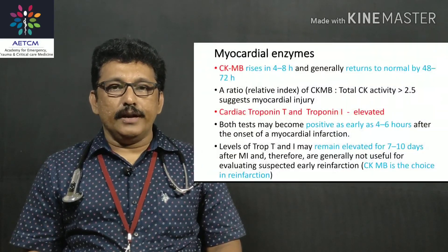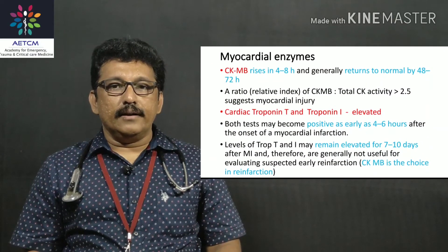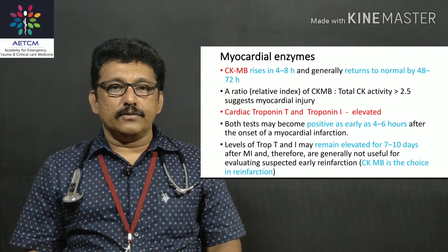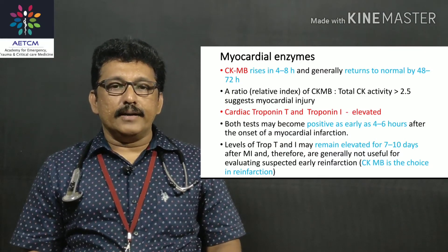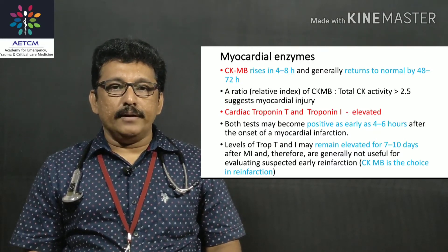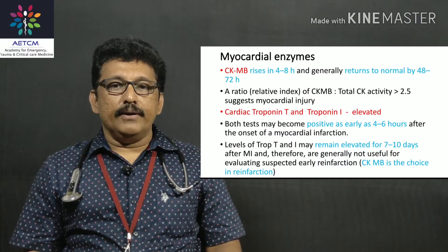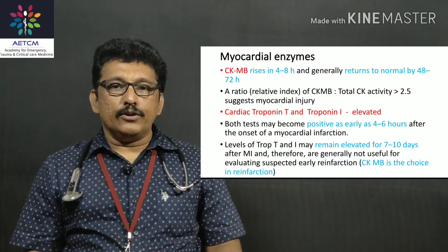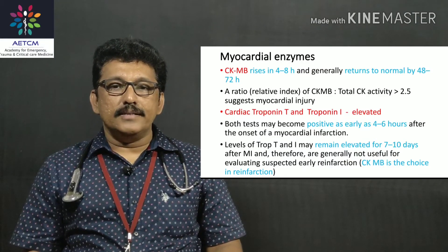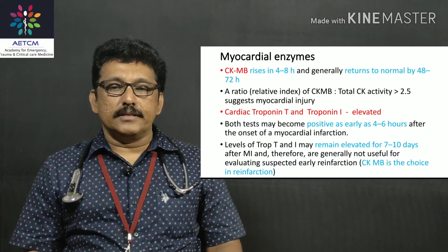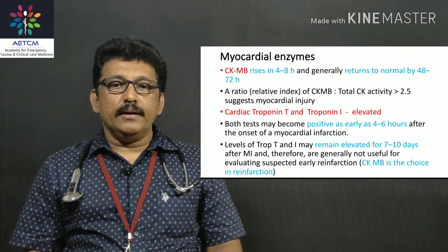There are two important cardiac enzymes. CKMB rises in the first four to eight hours and returns to normal within 48 to 72 hours. Troponin T and I are both elevated at four to six hours but return to normal in seven to ten days.